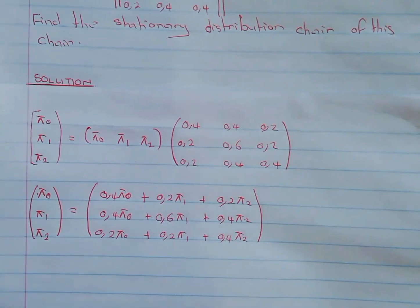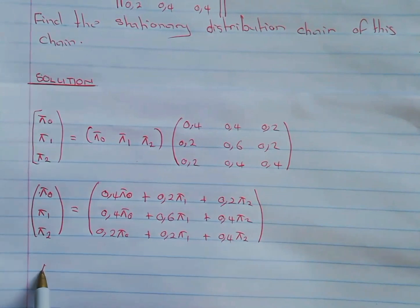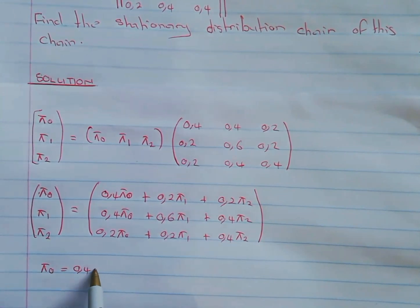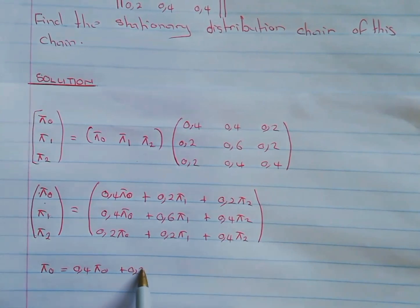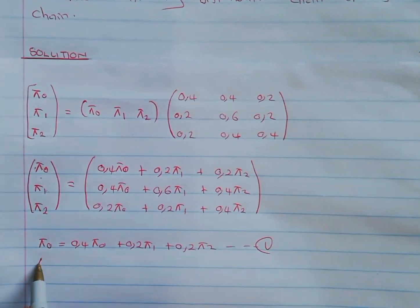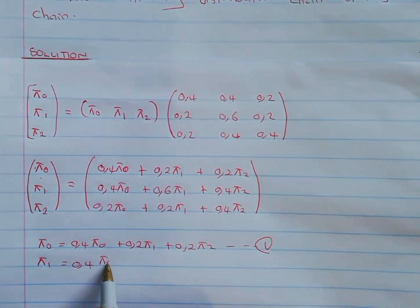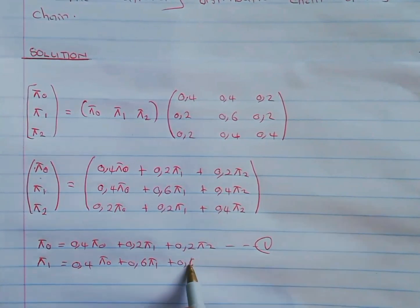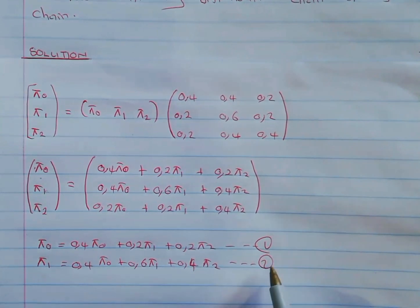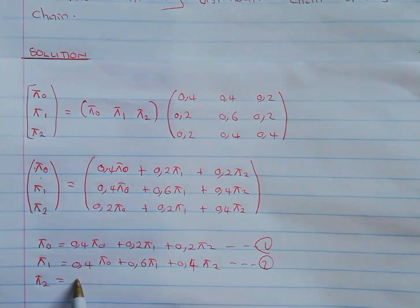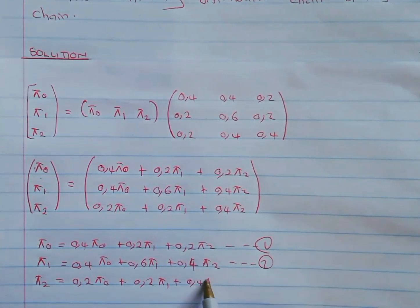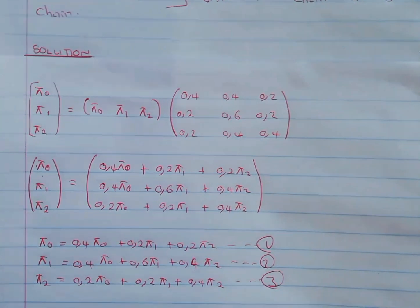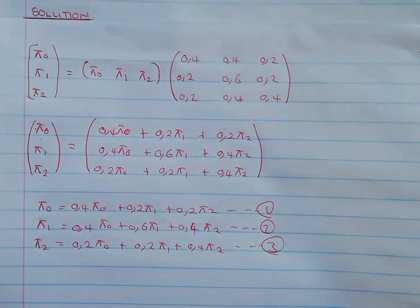Now let's write this as a system of linear equations. Equation 1: π₀ = 0.4π₀ + 0.2π₁ + 0.2π₂. Equation 2: π₁ = 0.4π₀ + 0.6π₁ + 0.4π₂. We now have a system of linear equations and we need to solve for π₀, π₁, and π₂.